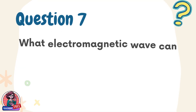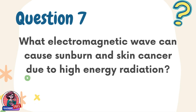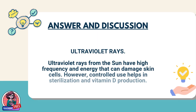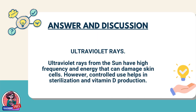Question 7. What electromagnetic wave can cause sunburn and skin cancer due to high energy radiation? Answer: ultraviolet rays. Ultraviolet rays from the sun have high frequency and energy that can damage skin cells. However, controlled use helps in sterilization and vitamin D production.